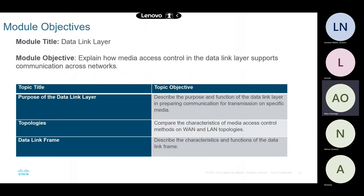Our objective for this chapter is to explain how media access control in the data link layer supports communications across networks. We have three main objectives: understanding the purpose of the data link layer, the technologies found within it, and the structure of the frame within the data link layer.